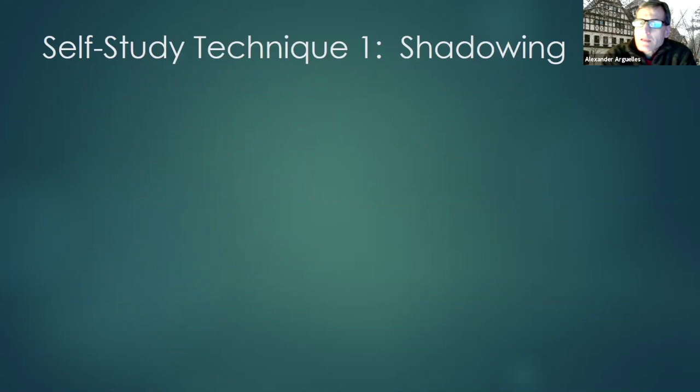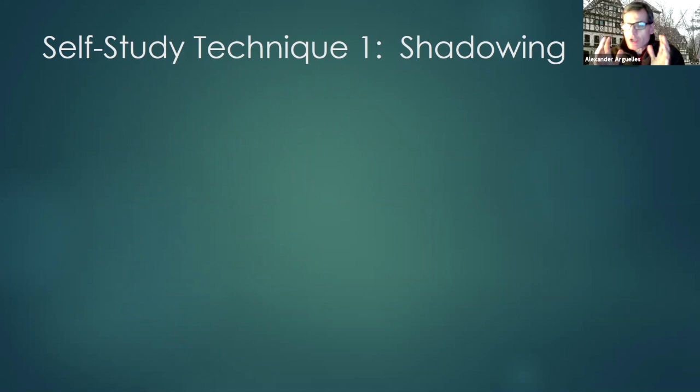The first technique I want to talk about I call shadowing. I call it shadowing because what you do — this is a spoken technique — is you shadow the voice of a speaker, you go along right behind it. You can sort of visualize something coming ahead, and you are there trying to stay as close to it as possible. So when something moves, your shadow moves with it.